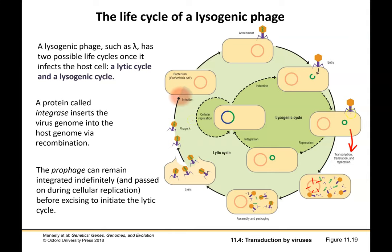In viruses that go through the lysogenic phase, after infection the virus can actually be repressed so it doesn't infect any more cells. Instead, an enzyme called integrase actually inserts that virus genome into the genomic DNA of the host cell. Then this cell just goes on its way, continues binary fission or mitosis, and replicates that viral genome. At some point, it can actually break out of this lysogenic cycle and become lytic — taking over the cell's machinery, coding for the virus, packaging the virus, lysis the cell, and infecting other cells.